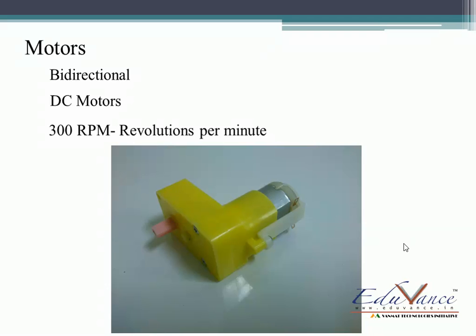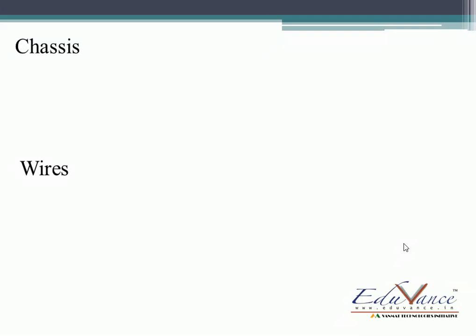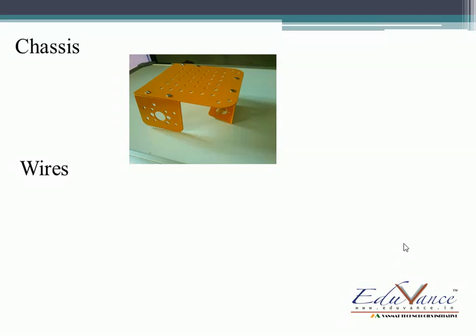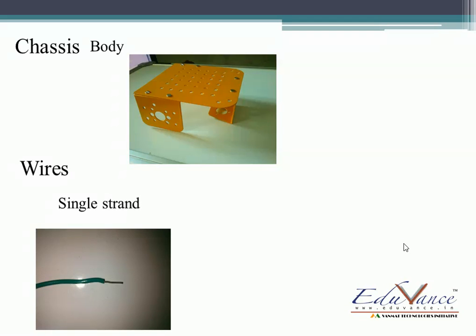We are going to enjoy using the toy that we are going to make. Then we have the chassis and wires. The chassis is also known as the body of the robot. In wires there are two types. One is the single strand wire. Just as the name goes, just one strand of metal is present. You use this wire usually with your breadboard when you want to conduct certain basic experiments.